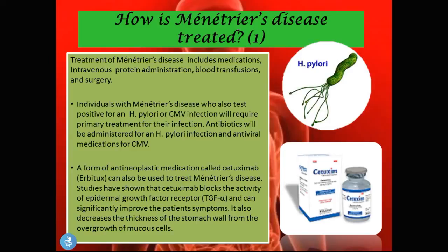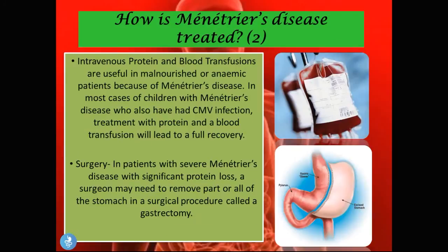Another form of treatment is an antineoplastic medication called cetuximab, which can also be used in the treatment of Ménétrier's disease. Studies have shown that cetuximab blocks the activity of the epidermal growth factor receptor and can significantly improve the patient's symptoms. It also decreases the thickness of the stomach wall from the overgrowth of mucous cells. Intravenous protein and blood transfusions are also useful in malnourished or anemic patients. In most cases of children with Ménétrier's disease who also have a CMV infection, treatment with protein and blood transfusions will lead to a full recovery.